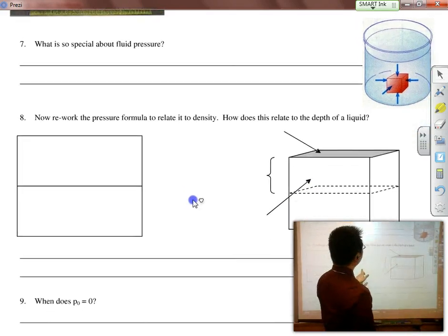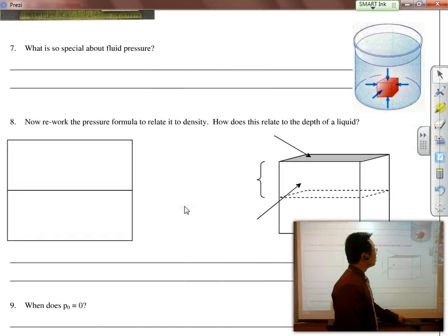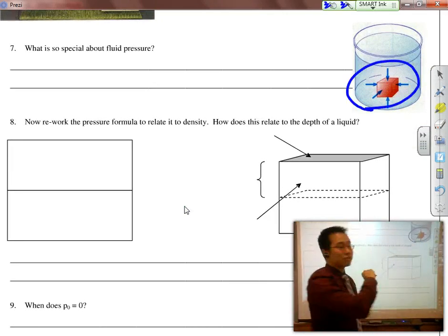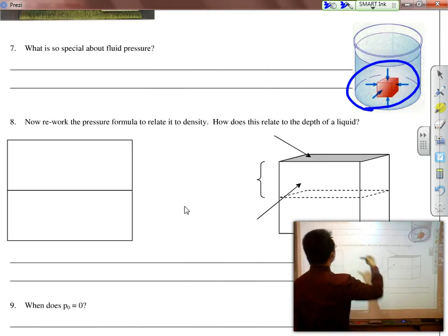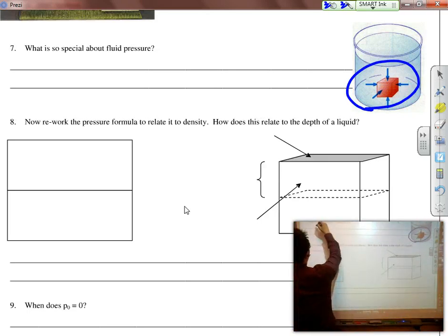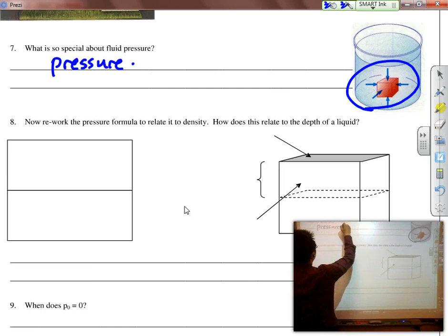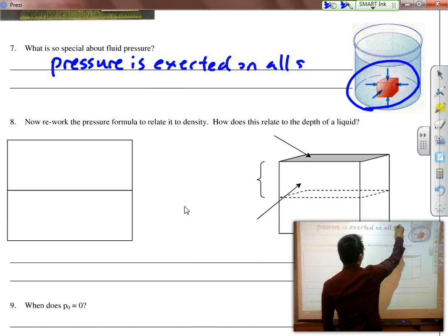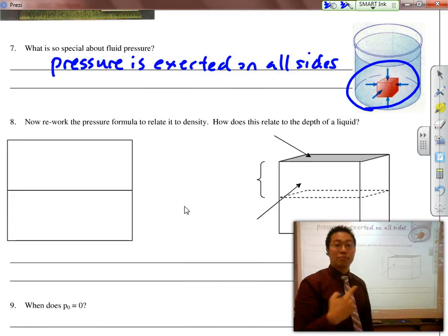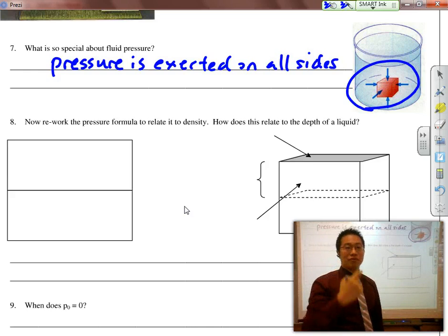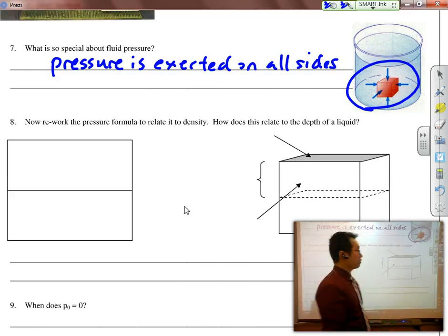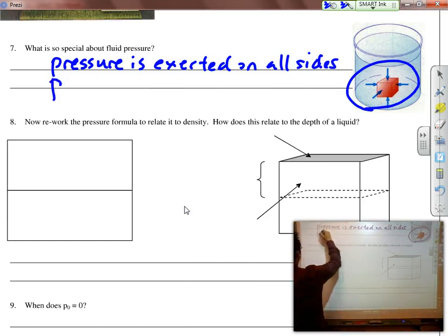Fluid pressure, there's a couple things that are special about it. First of all, is that the fluid surrounds an object on all sides. So with fluid pressure, pressure is exerted on all sides. And the pressure level, the pressure amount is exactly the same if you're at the exact same depth. So pressure is constant at a specific depth.